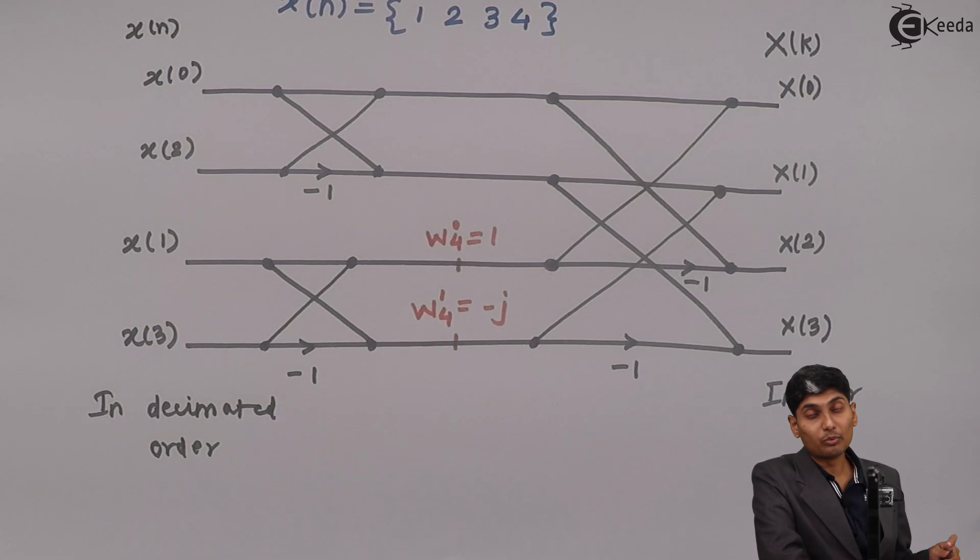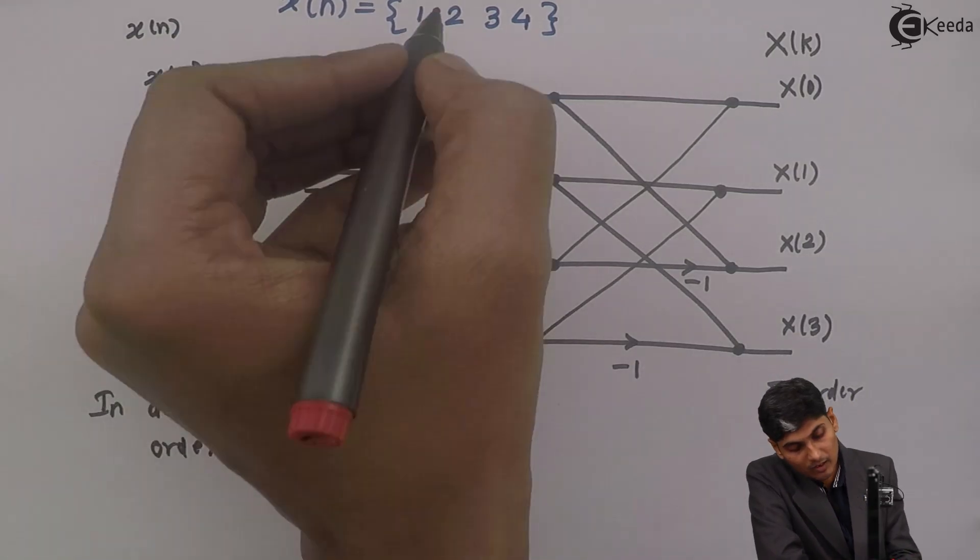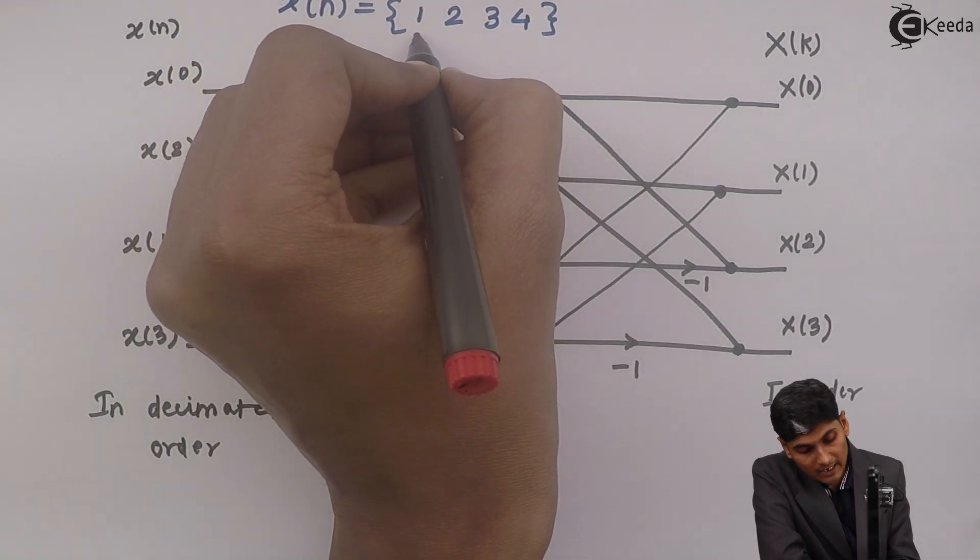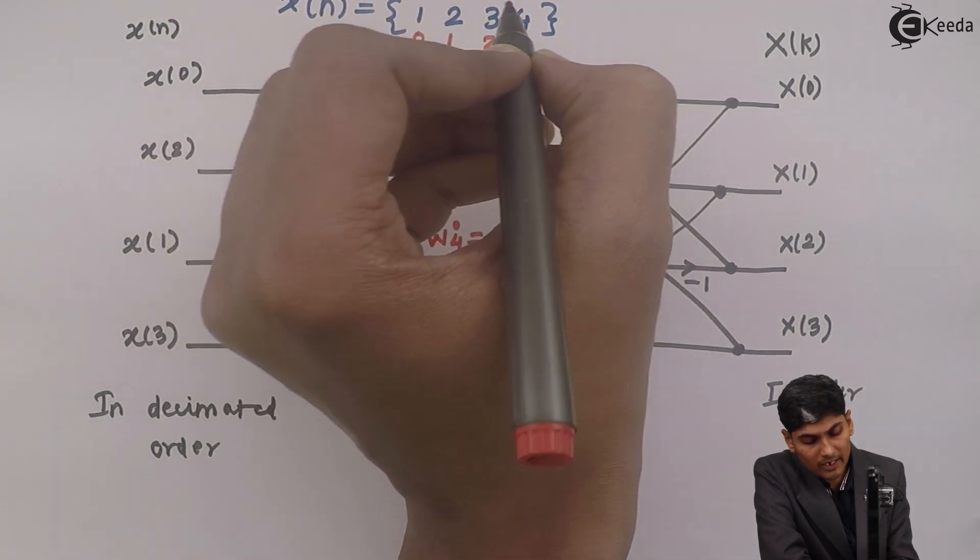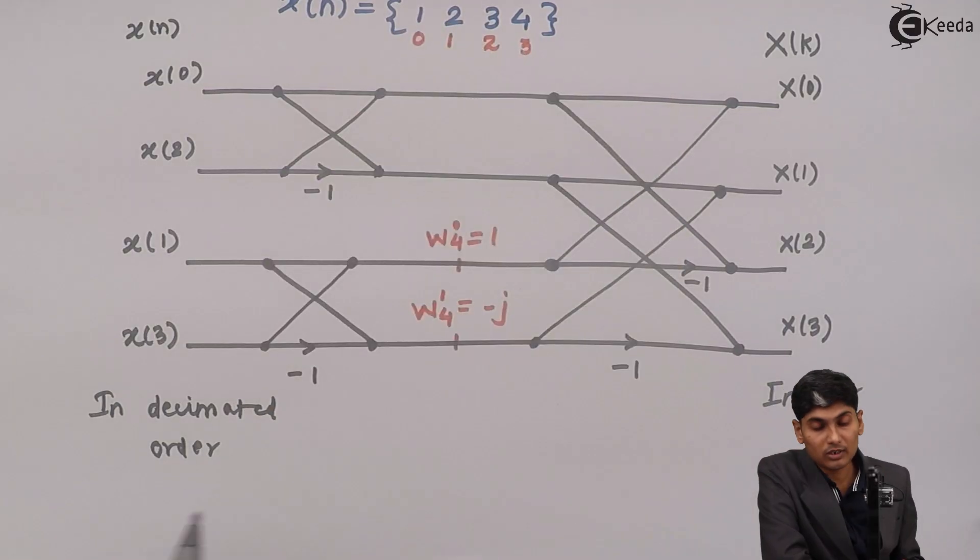First of all, I need to break up the sequence. I know the value of n at this point is 0, value of n at this point is 1, value of n at this point is 2, and over here is 3.